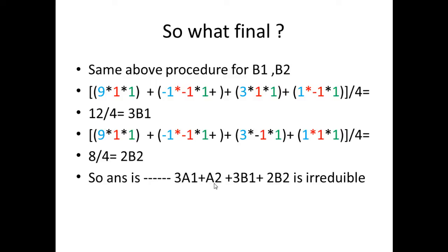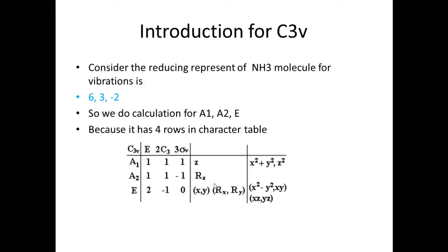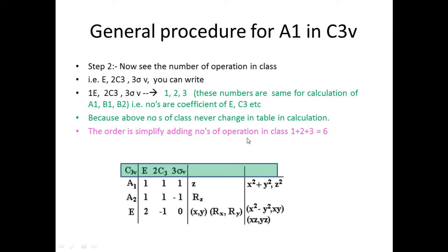Next, consider the ammonia molecule for the C3V character table. These are the reducible representations which can be decomposed further. We calculate for A1, A2, and E, because the C3V character table has those rows. The coefficients for the classes are 1, 2, and 3, corresponding to E, C3, and sigma planes. The order is simply the sum of the number of operations: 1 + 2 + 3 = 6.